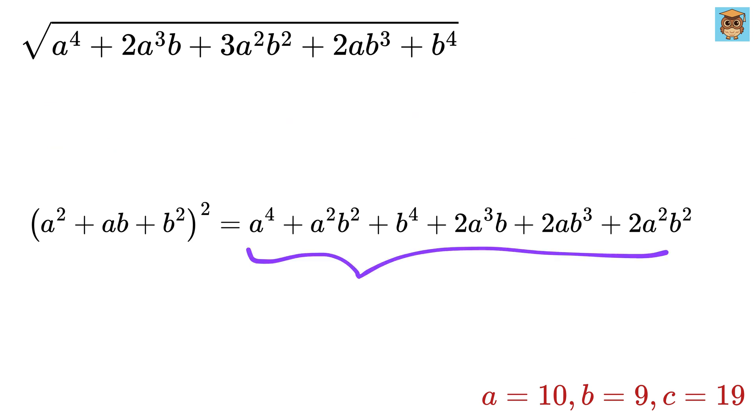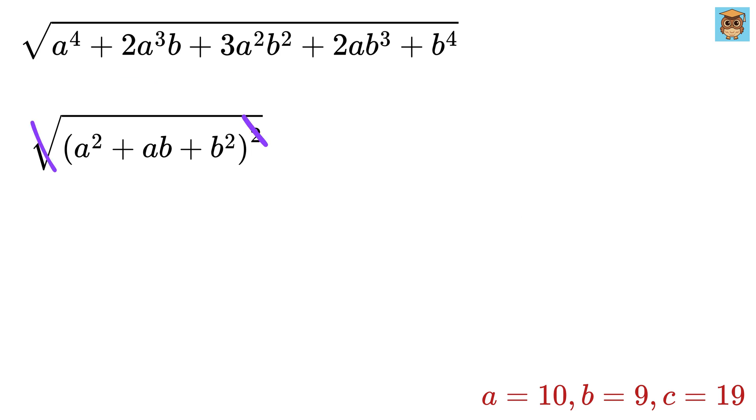So after putting all these together, we get this, which is exactly what we had inside the square root. So replace this with square root of A squared plus AB plus B squared whole squared, and both these will cancel each other to give us A squared plus AB plus B squared. Nice.